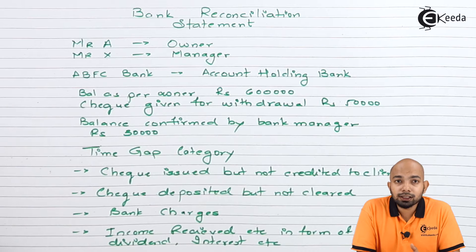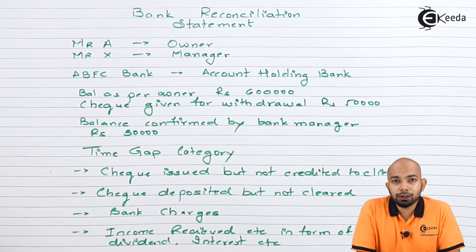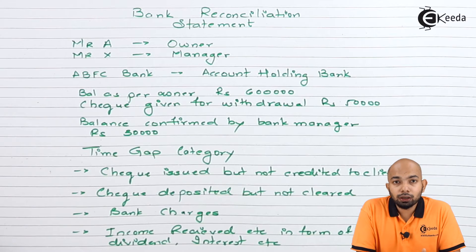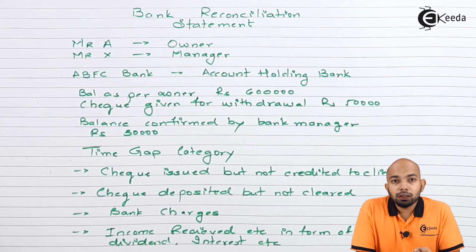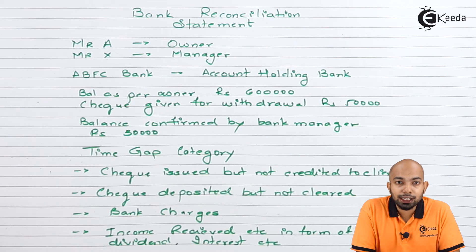Apart from time gap reasons, there is another set of reasons known as errors committed due to human mistake. There are three kinds: first, complete omission — a transaction is entirely omitted from either the cash book or pass book; second, recording twice — the same transaction is recorded twice; and third, recording a wrong amount — the recorded amount is erroneously entered incorrectly. These human errors can cause a difference between the cash book and the pass book.